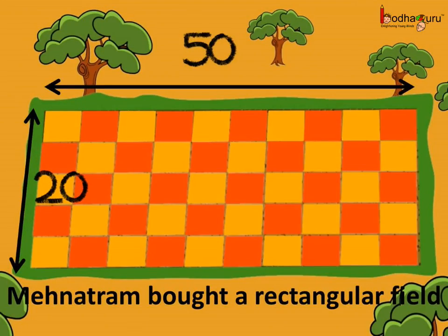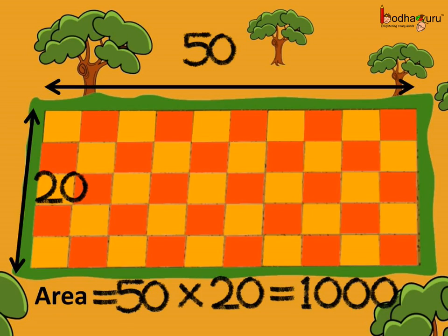Mehlet Ram bought a rectangular field for farming. It is 50 meter long and 20 meters wide, so we can say area was length multiplied by width, which is equal to 50 multiplied by 20, and this is equal to 1000 square meters.